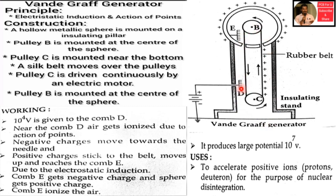Pulley B is near the bottom and is controlled by an electric motor. Pulley A is near the center of the sphere. A potential of 10 to the power 4 volts is given to comb D, due to the sharp-point discharge effect.